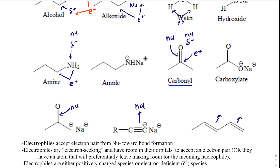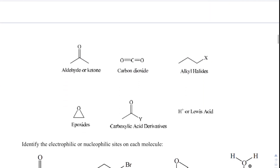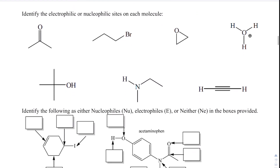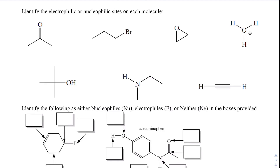Looking at a last example, we have only nucleophiles here — no delta-positive areas. One thing you might accidentally mistake is thinking that if you have a nucleophile, you must have an electrophile. That's not necessarily true — some molecules only have nucleophilic sites with no delta-positive area at all.